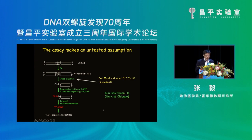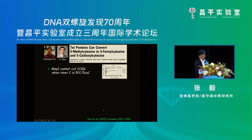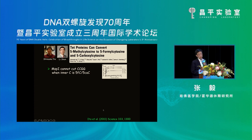To check whether that was the case, we contacted Ho Chuan and started a collaboration. He synthesized different forms of modified cytosine and we used these to test whether MspI would cut or not. The result showed that MspI will cut cytosine, hydroxymethylcytosine, and 5-methylcytosine, but does not digest if the inner cytosine is formylcytosine or carboxylcytosine.